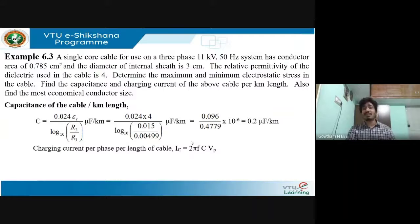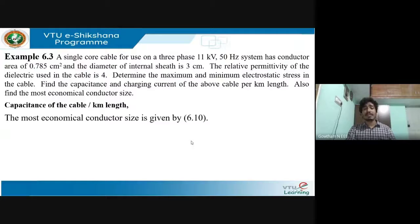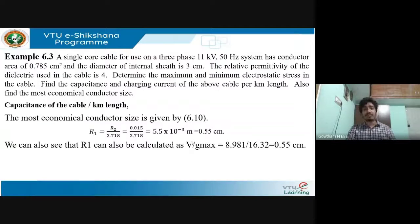The charging current per phase is Ic = 2πfCVp. Substituting frequency 50 Hz, C = 0.2 × 10⁻⁶, and the phase voltage, the charging current is 0.399 amperes per kilometer. The most economical conductor size is given by r1 = r2 / 2.718, giving r1 = 0.55 cm.